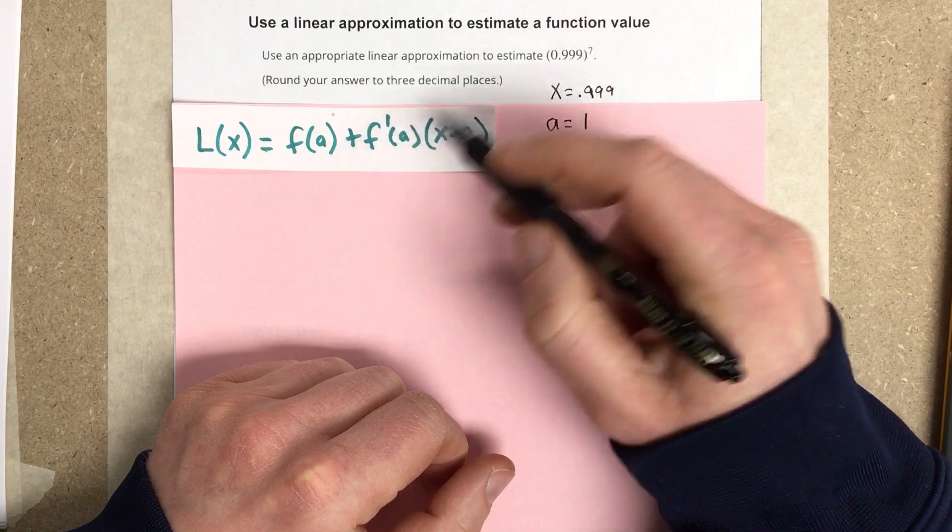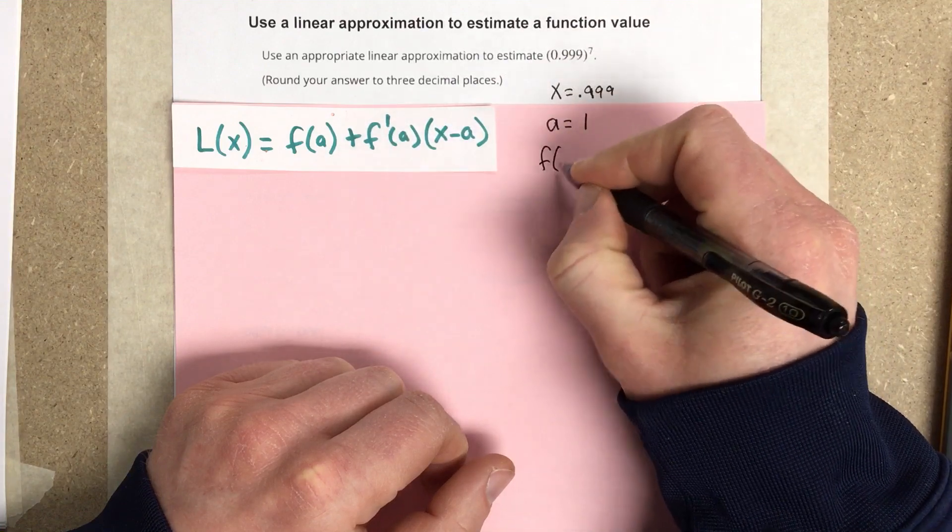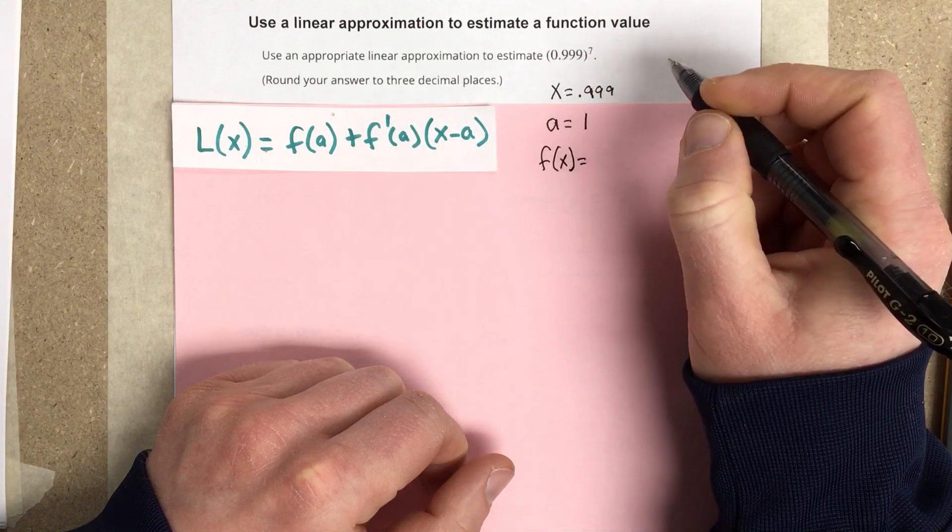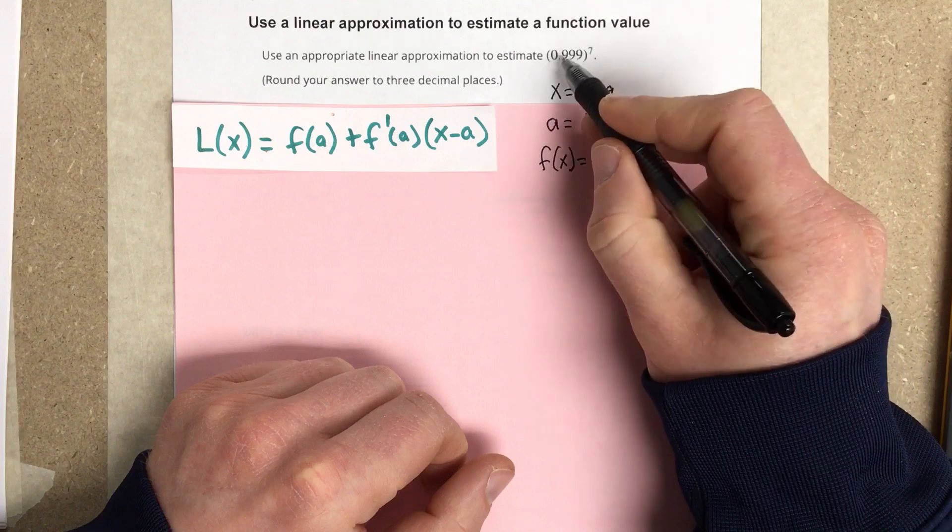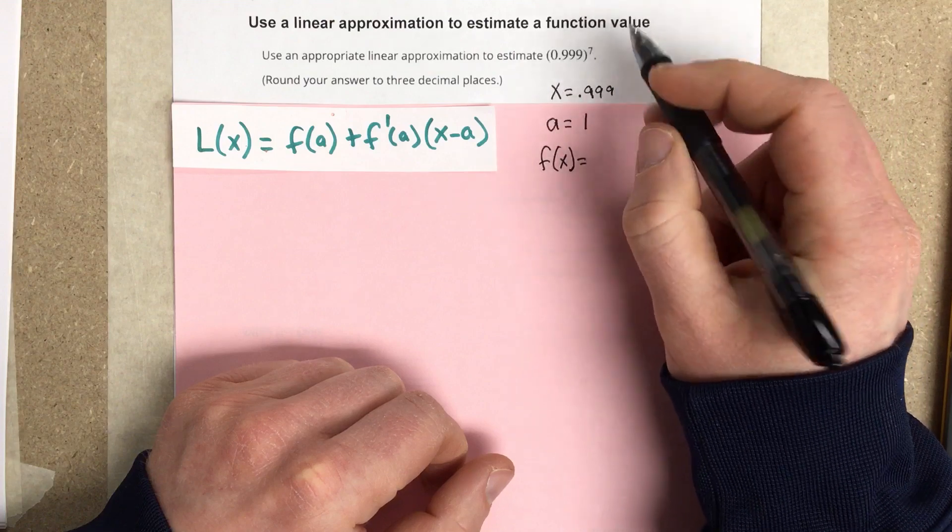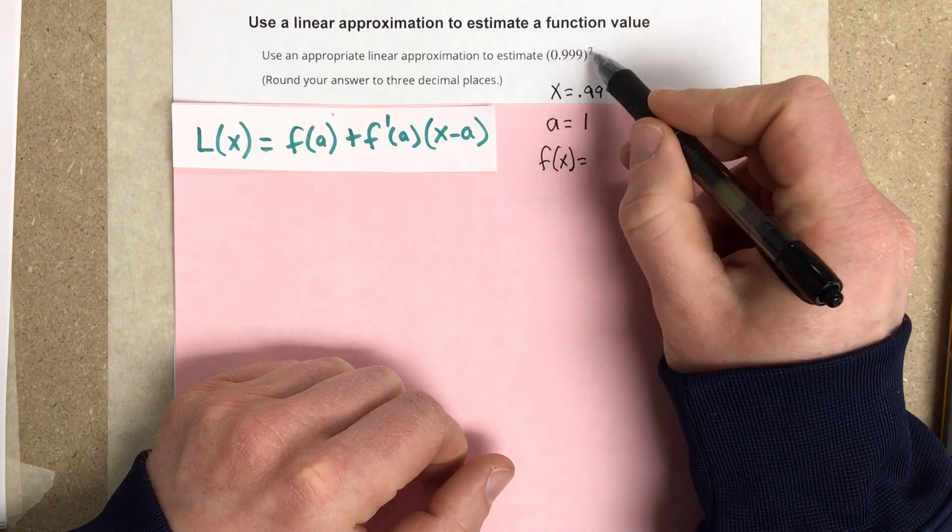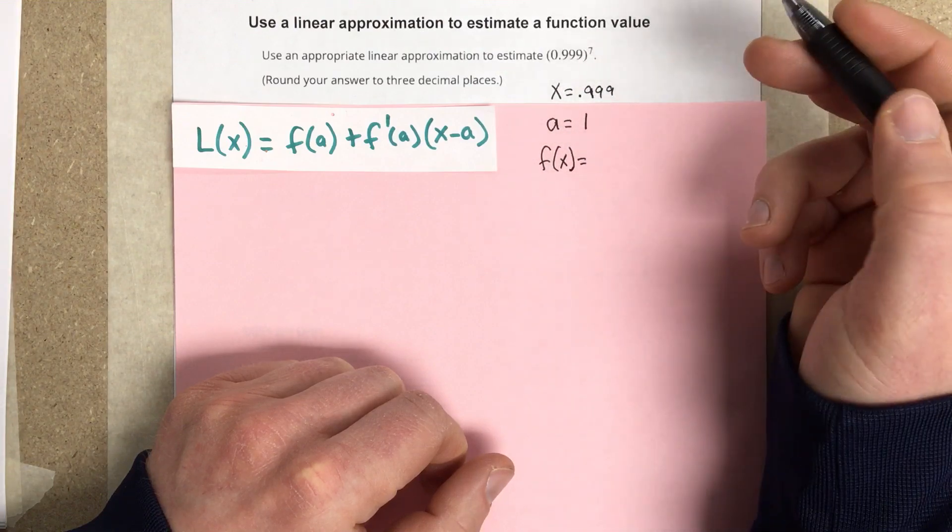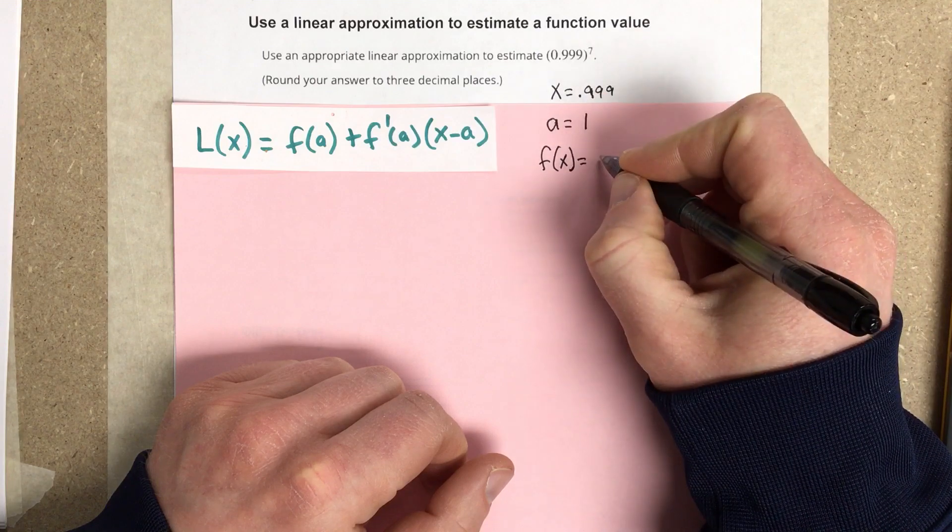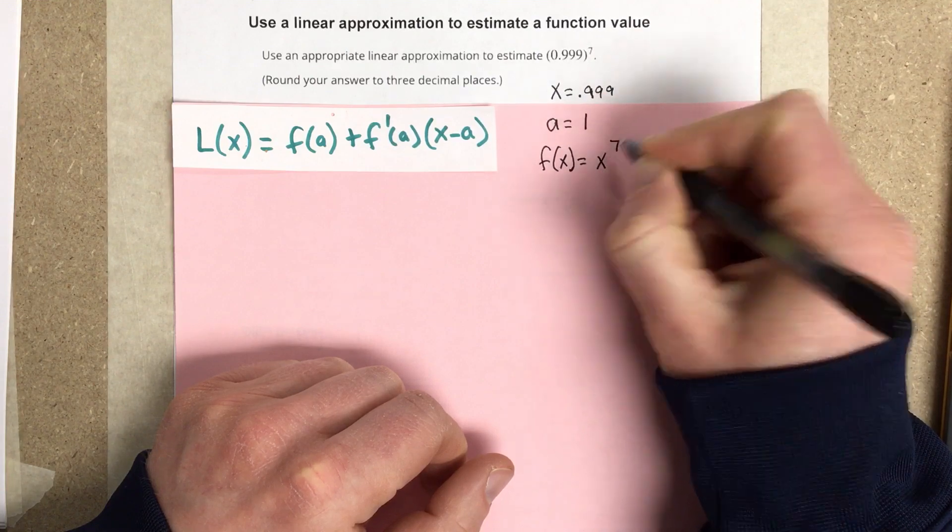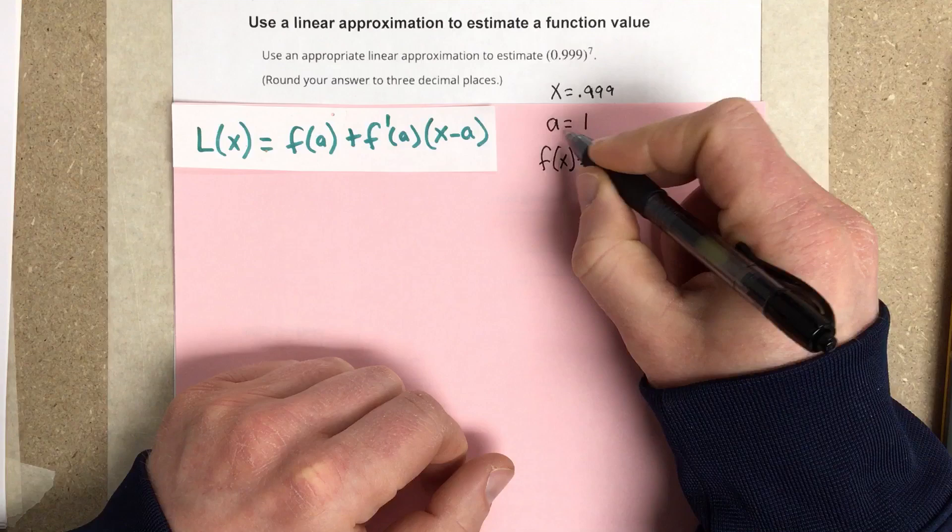And then they want us to pick a function. We can pick really any function that is close to this function, that when we use a specific a value, gives us a number that's close to that number. So I'm just going to pick x to the 7th. But there are other versions of this where you can pick other functions and other a values.